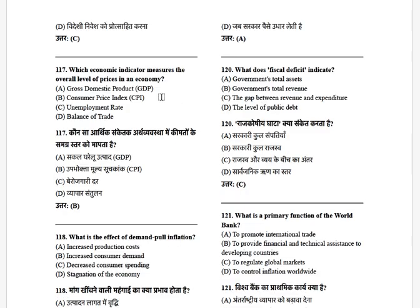Which economic indicator measures the overall level of prices in an economy? The options are: GDP, CPI, unemployment rate, and balance of trade. The answer is the Consumer Price Index (CPI).